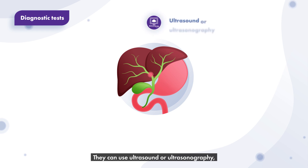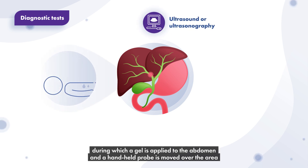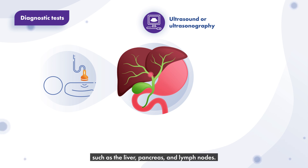They can use ultrasound or ultrasonography, during which a gel is applied to the abdomen and a hand-held probe is moved over the area, while high-frequency sound waves create a picture of the bile ducts and the surrounding organs, such as the liver, pancreas, and lymph nodes.